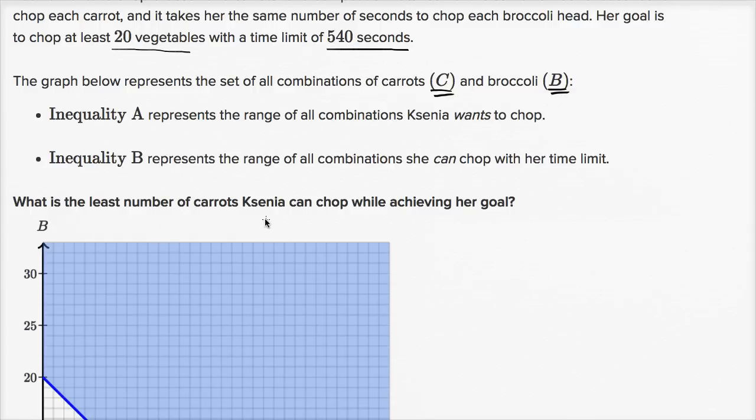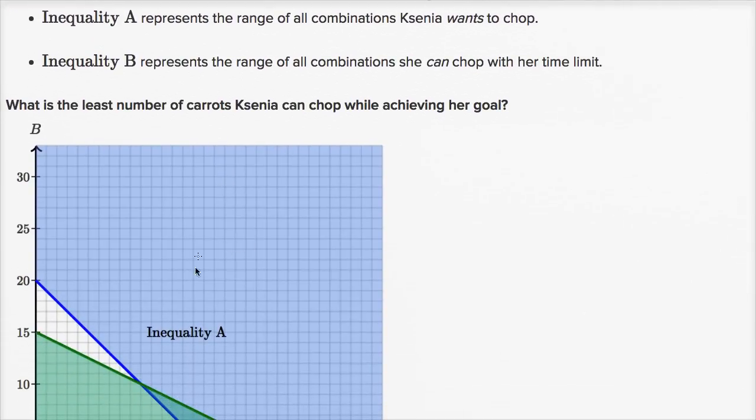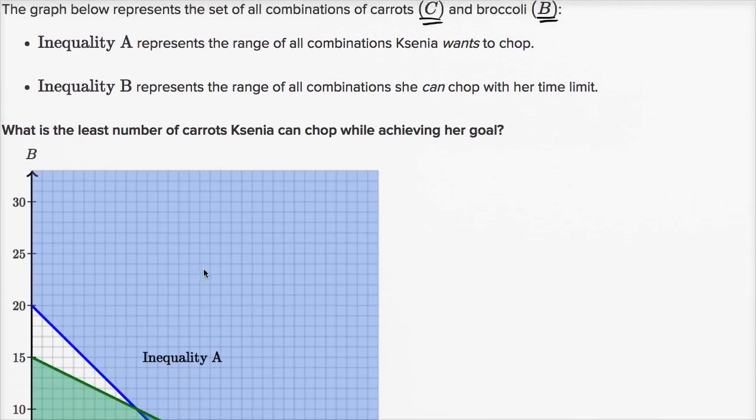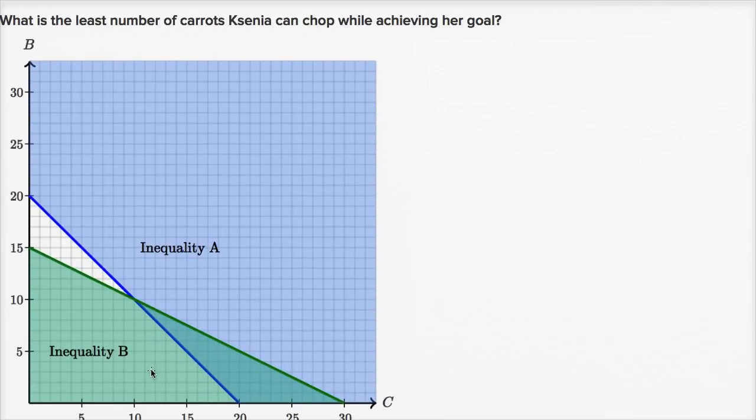What is the least number of carrots Ksenia can chop while achieving her goal? Well, her goal, remember, she wants to chop at least 20 vegetables, so you want to be in the blue area. You want to be in the solution set for Inequality A, which would be the blue area or on the blue line. And she wants to achieve her goal of meeting the time limit. So she needs to also be in the solution set for Inequality B. So she also has to be in the green area or on the green line.